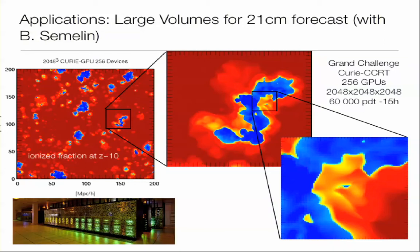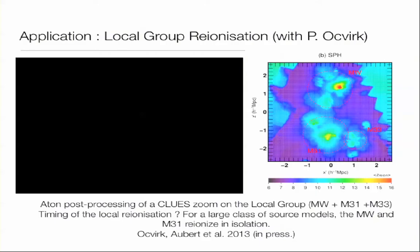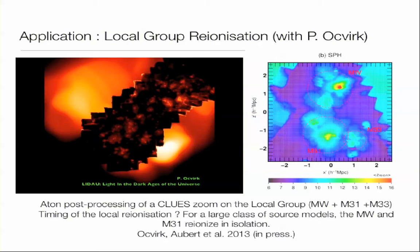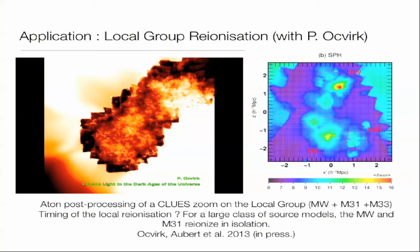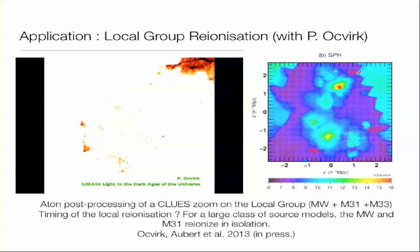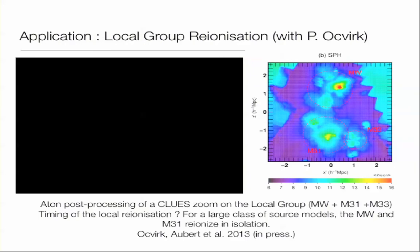So we did stuff like this. I will be very quick on that. For example, we ran a 2014 radiative transfer calculation on the Curie supercomputer on 256 devices. More recently, one of my collaborators tried to simulate the history of reionization of the local group. And basically, the conclusion that we found in this paper is that for large class of source models, the Milky Way and M31 reionize in isolation if we don't consider external influence by nearby galaxy clusters.